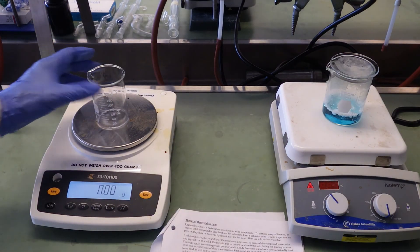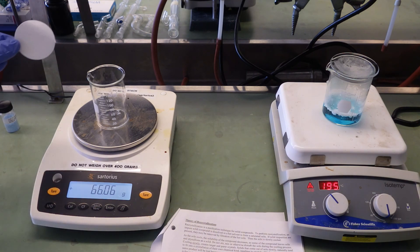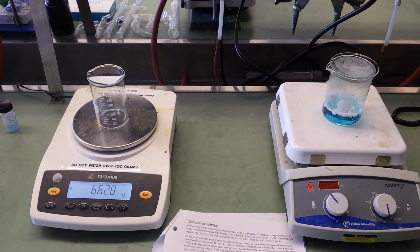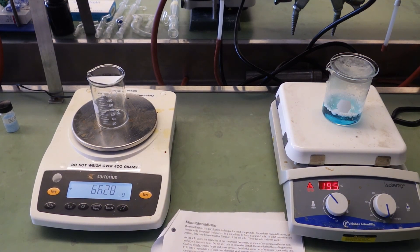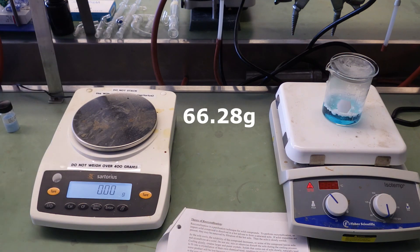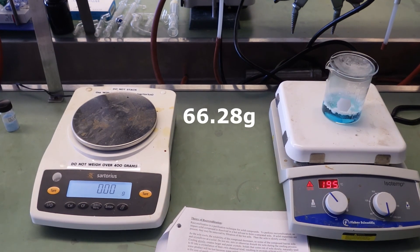In the meantime, we're going to weigh a 100 mL beaker and a filter paper that we'll use to collect the salicylic acid crystals in the filtration step that's upcoming. 66.28 grams.